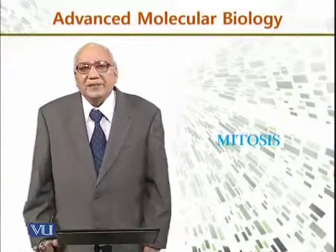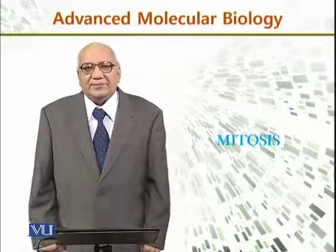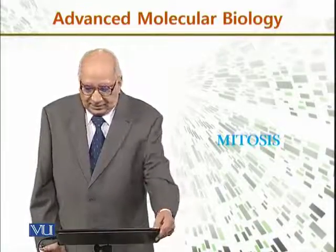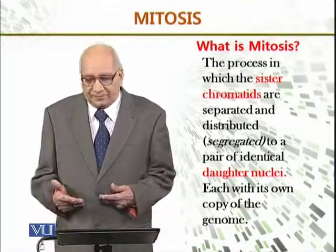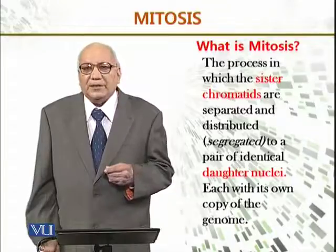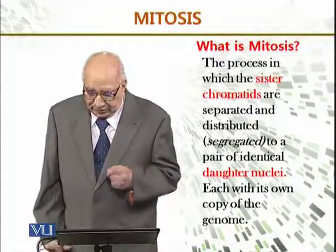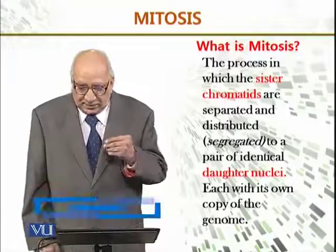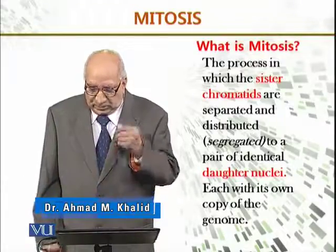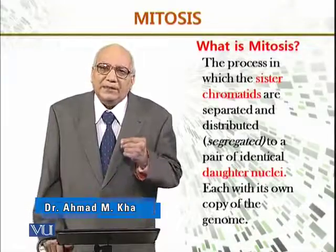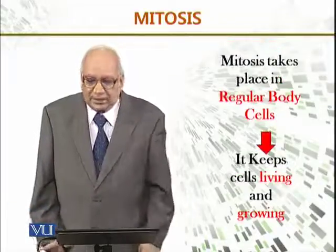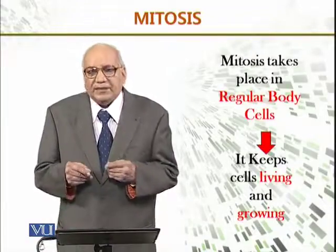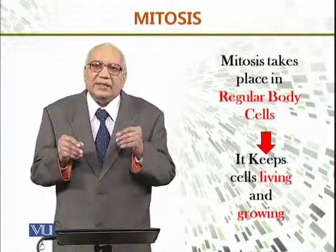In advanced molecular biology, the third series of lectures on cell synthesis covers mitosis. The process in which sister chromatids are separated and distributed — that is, segregated — to a pair of identical daughter nuclei is known as mitosis, each with its own copy of the genome. In the cell cycle, the most important function for the cell is to produce a similar cell. Mitosis takes place in regular body cells.